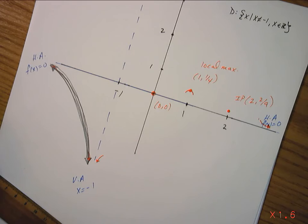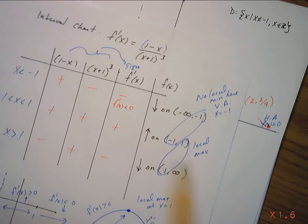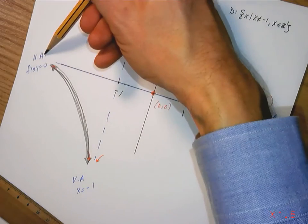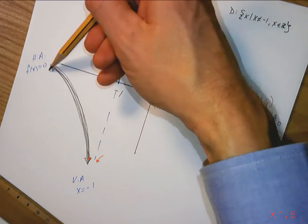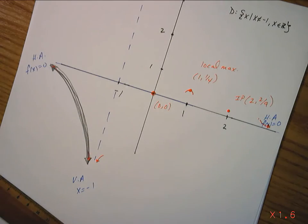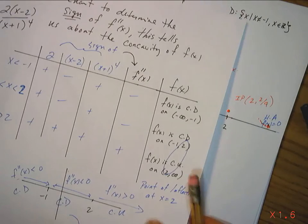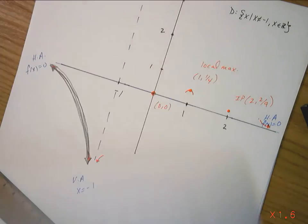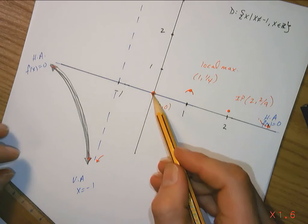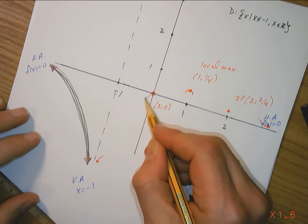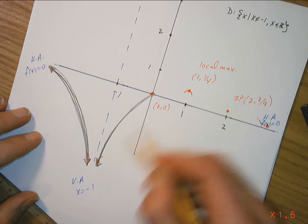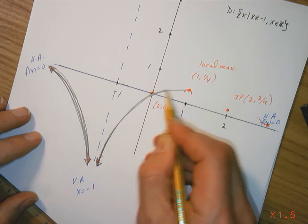My interval chart says that I should be decreasing from negative infinity to negative 1. And as I go from negative infinity towards negative 1, I am decreasing. And my concavity says that I should be concave down from negative infinity to negative 1. And I am concave down. All right. So, the next one. This point here. Well, it kind of makes sense if I kind of come down like that. And it kind of makes sense if I kind of come up like that.